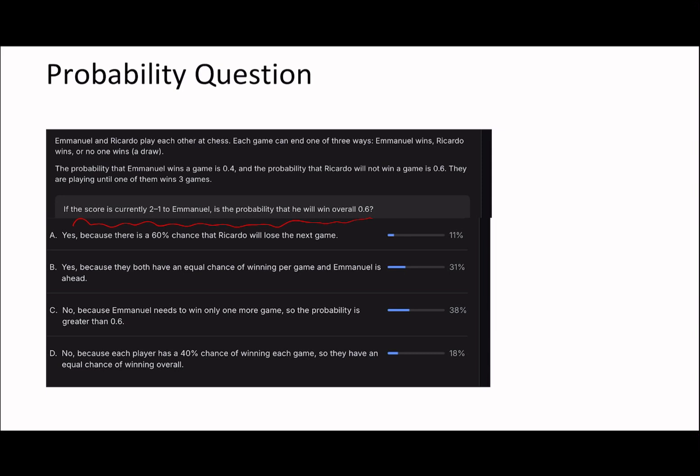So if the score is currently 2-1 to Emanuel, is the probability that he will win overall 0.6? Well, the probability for Emanuel to win overall, basically the fastest way to calculate this is probably to do 1 minus Ricardo winning. And the only way for Ricardo to win is if he wins the next two games, because it's the first to three. So the probability of Ricardo winning a game is 0.4, because him not winning a game is 0.6. So 0.4 times 0.4 is 0.16.